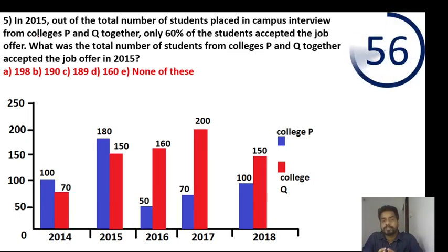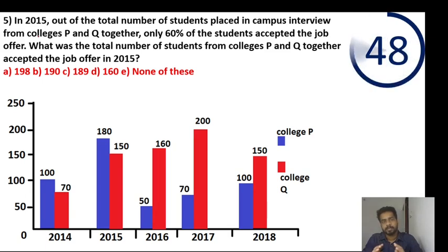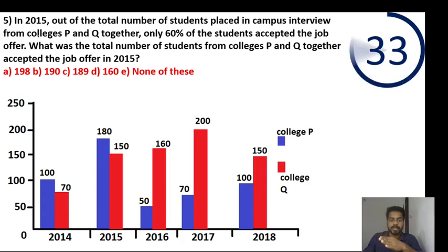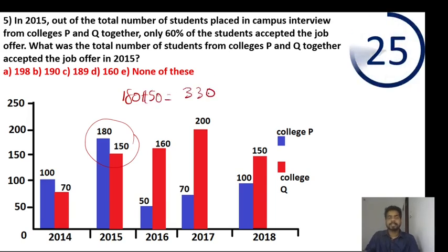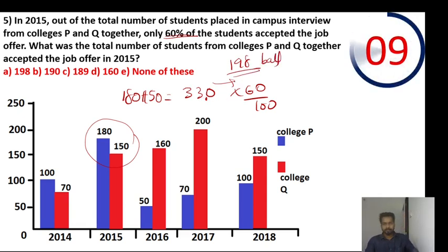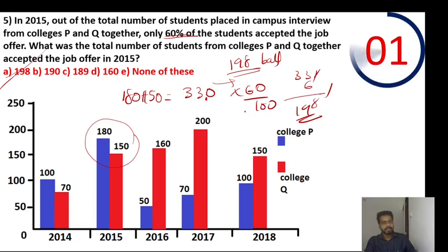In 2015, out of the total number of students placed in campus interview from college P and Q together, only 60% of students accepted the job offer. Total for 2015: 180 plus 150 equals 330. 60% of 330 — so 10% is 33. All right, so that's the answer.